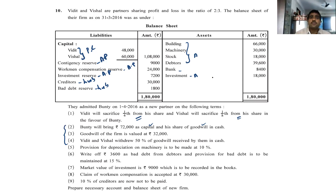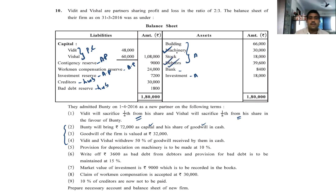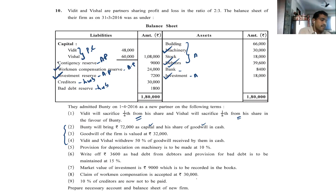Provision for depreciation on machinery — machine, I am putting a tick mark at 10%. Write off 3,600 as bad debt from debtors and provision for bad debt is to be maintained at 15% — debtors gets two tick marks. Market value of investment is 6,000, which is to be recorded in the books — investment tick mark as well as investment reserve tick mark. Claim of workman compensation is 30,000, so we cannot distribute this. 10% of creditors are not to be paid — creditors get a tick.